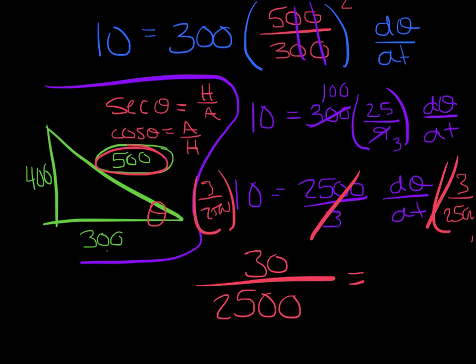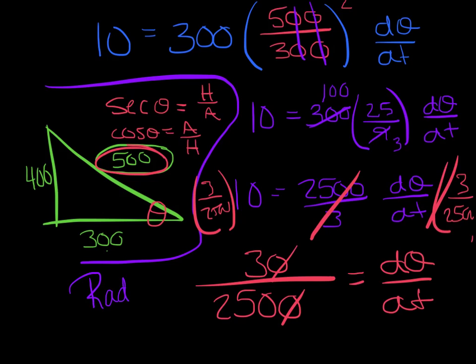Canceling a zero, we're left with dθ/dt = 3/250. And watch the units: theta is measured in radians and we're per second, so the answer is radians per second. Our main focus today was related rates with a triangle, and we look forward to some practice in class. Have a great night.